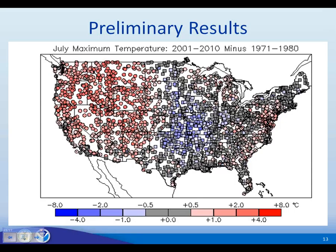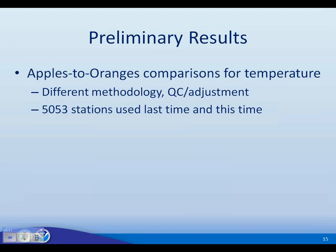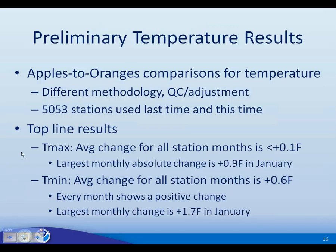Scott from Goodland asked about generalities on how precipitation varied between the two 30-year periods. Anthony said they don't have top-line numbers yet, but based on monitoring work at NCDC they don't anticipate any large-scale national increase or decrease. They expect regional patterns for different seasons, and potentially drier conditions in the west due to the long-term drought going on there.